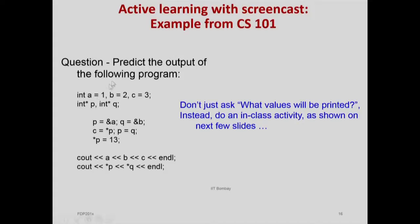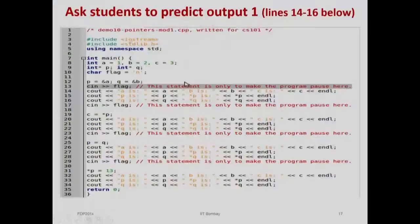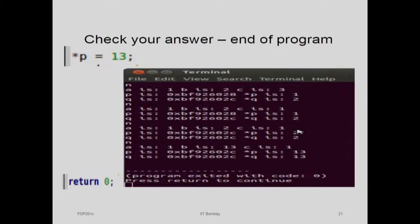After P is equal to Q, students see that the value of star P changes to the same as the value of Q, and the memory address they point to also becomes equal. Finally, when values are reassigned, students see the final output. Each pause's values are captured in the screencast. The main point: instead of simply asking students to predict the final output — say 1, 13, and 1 — we pause at several intermediate steps, making students predict and reconcile their answer with the actual answer at each step. This process of making students predict, think, and reconcile adds a lot of value to learning.